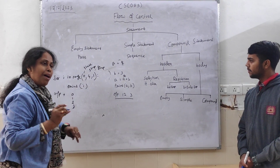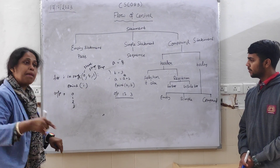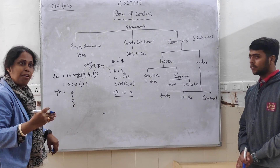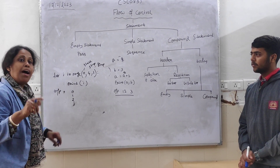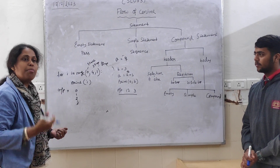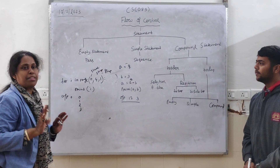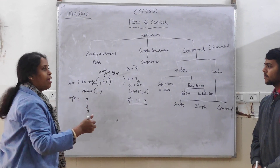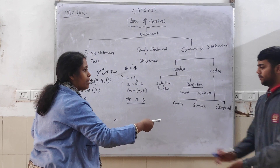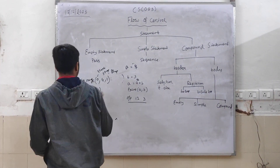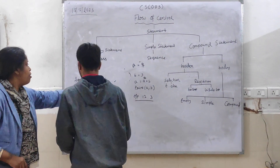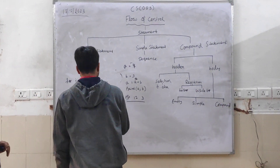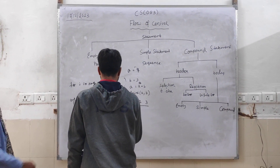While loop is also used for repetition. For example, I am telling Sanjana: stand up and sit down — 10 times. That is repetition. Along with for loop, there is also while loop. Let me show you how you can convert for loop to while loop with the same example: range(0, 4, 1).